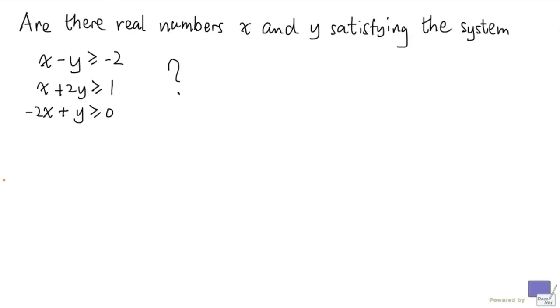Are there real numbers x and y satisfying the system of linear inequalities shown here? Because there are only two variables x and y, we could answer this question by graphing these inequalities on the xy plane. But this is not what we're going to do here. We're going to try to answer this algebraically.